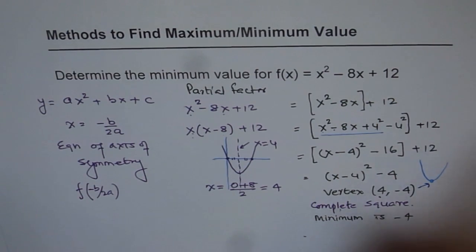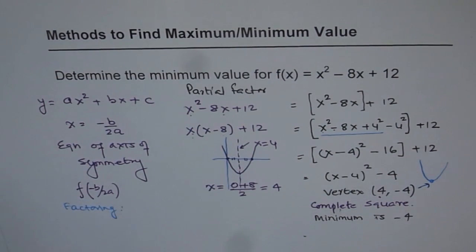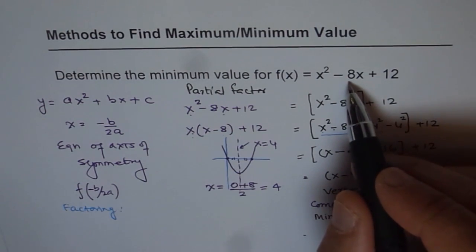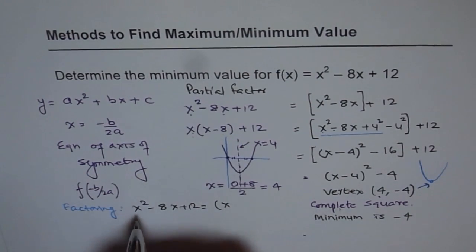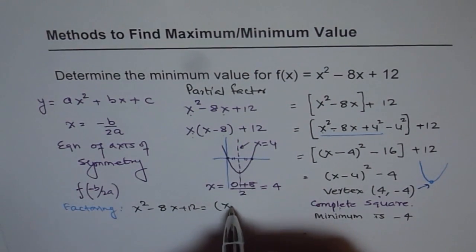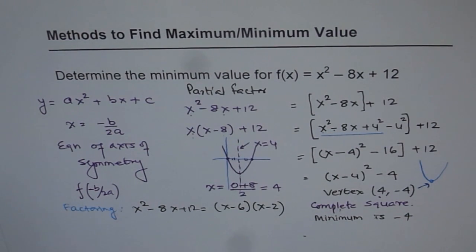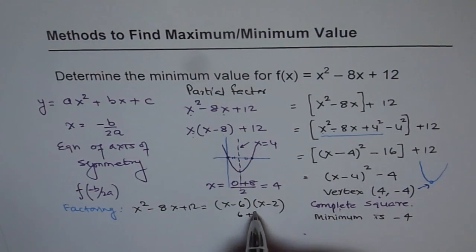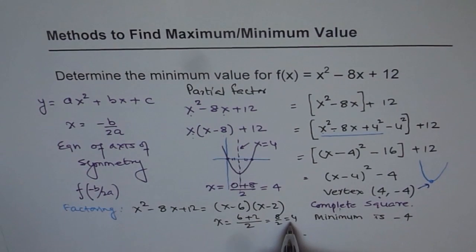You can also factor the equation. This one was easy to factor. For x squared minus 8x plus 12, we look for two numbers whose product is 12 and whose sum is minus 8. The numbers are minus 6 and minus 2. So we can write x squared minus 8x plus 12 as (x minus 6)(x minus 2). Since a is positive, we are looking for a minimum, which lies between the two roots: (6 plus 2) divided by 2 equals 4. So at x equals 4 we have the axis of symmetry and our minimum.